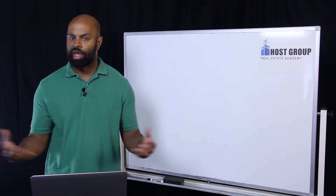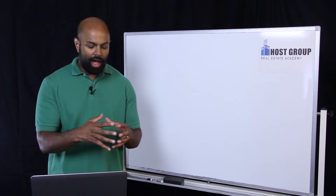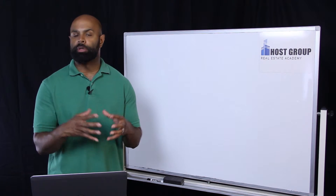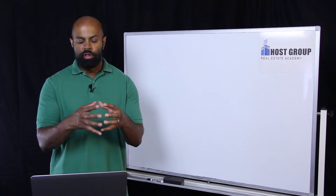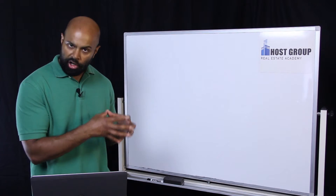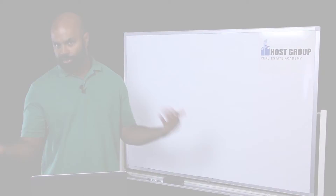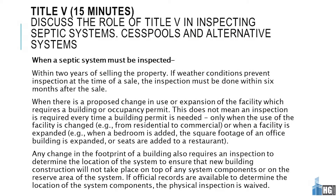It's called Massachusetts Title V. If you look it up, the Department of Environmental Protection's Section 5 of their code covers septic and cesspool inspections. When must a septic system be inspected? Within two years of selling your property.